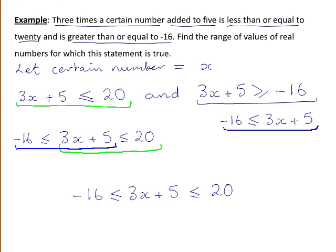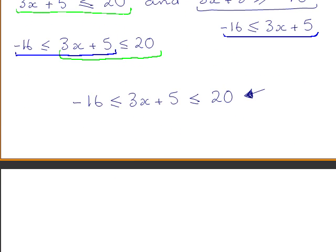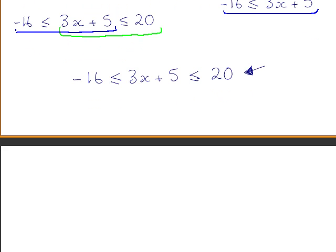We were asked to find the range of values of real numbers for which the statement is true. We let the number be equal to x, so we are finding the range of values of x, where x is a real number, that satisfy this combined inequality. To solve for x, we want to isolate the x term in the middle part of the inequality.